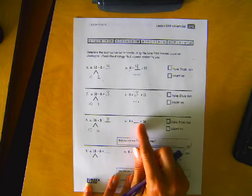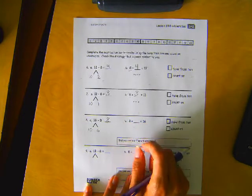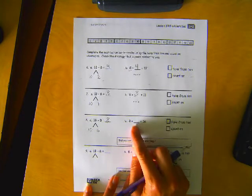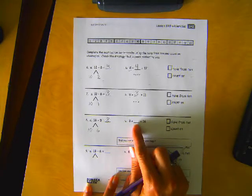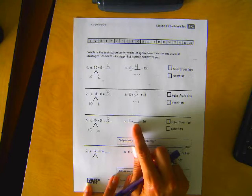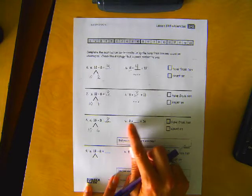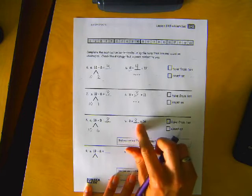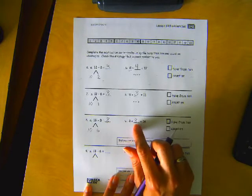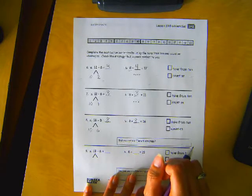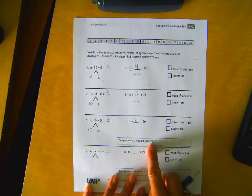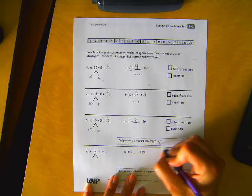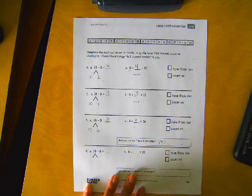8 plus blank equals 16. Well, you could count on, or if you know your doubles, you could know right away what this number is. 8 plus 8 equals 16, right? If you know your doubles, then that's going to help you. Down here it says, did you use a different strategy? We could write yes, because we used our doubles facts.